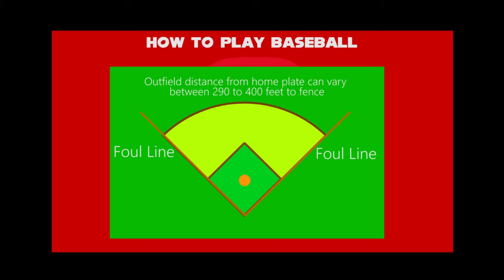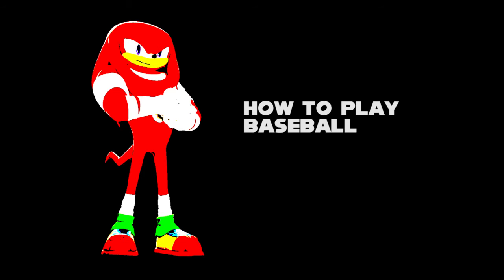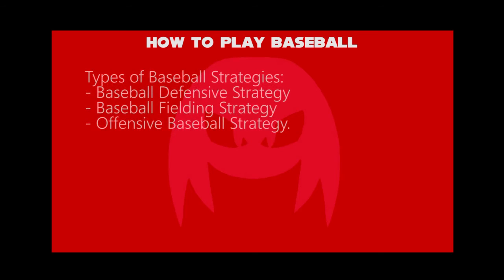The outfield distance from home plate can vary between 290 to 400 feet to the fence. Rather than just the tactics, let's find out the baseball strategies. Let us discuss baseball defensive strategy, baseball fielding strategy, and offensive baseball strategy.